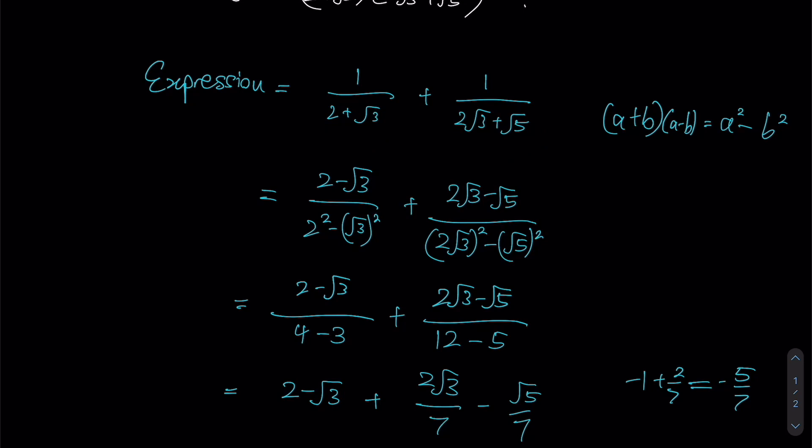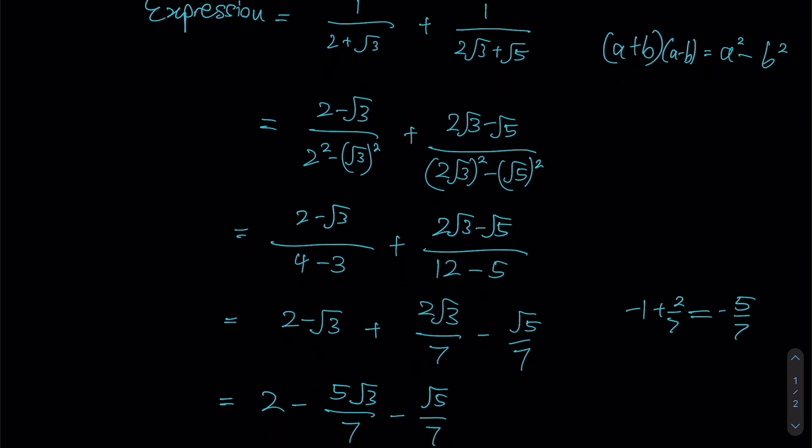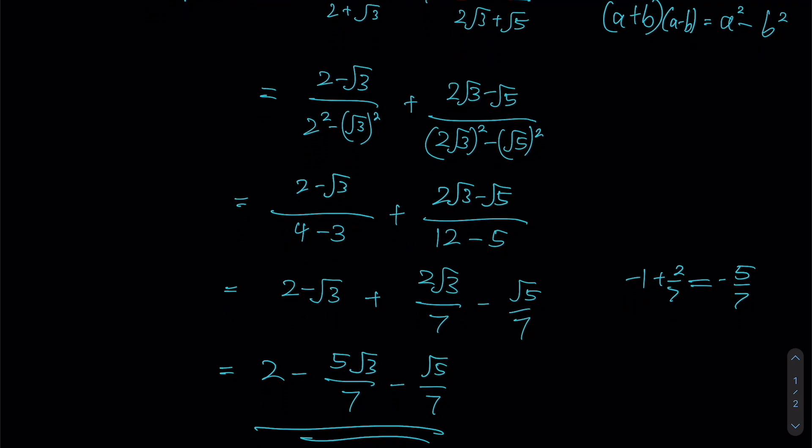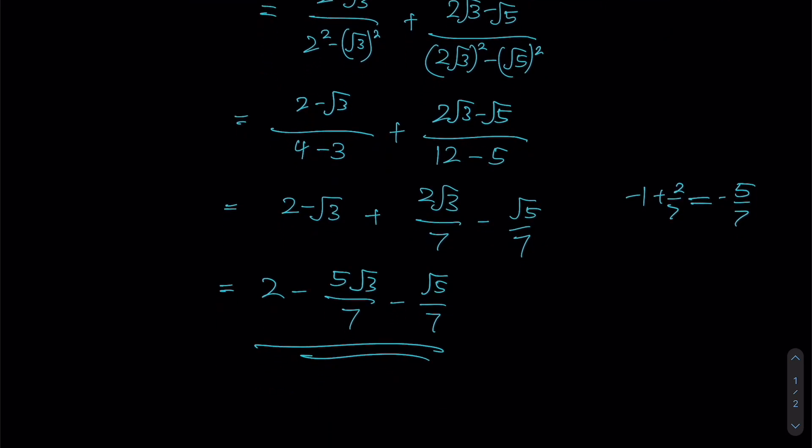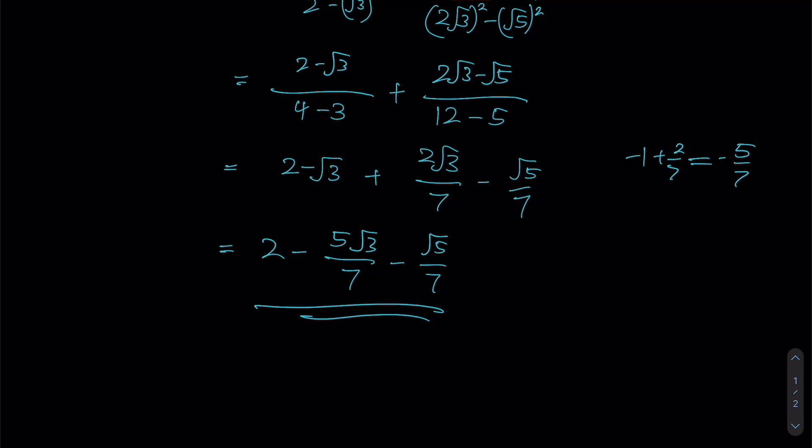So by rationalizing, we are mostly going to convert them into a form of a squared minus b squared, right? Rationale being we're trying to get rid of the square roots. So we just need to multiply both fractions accordingly with the form of a minus b, right? Then afterwards, we just have to simplify step by step and therefore we get our final answer as shown over here.